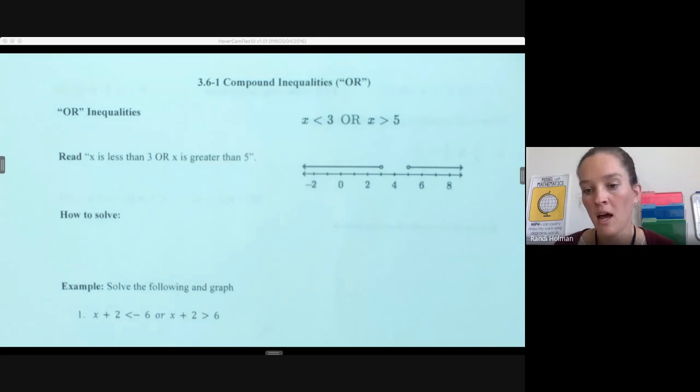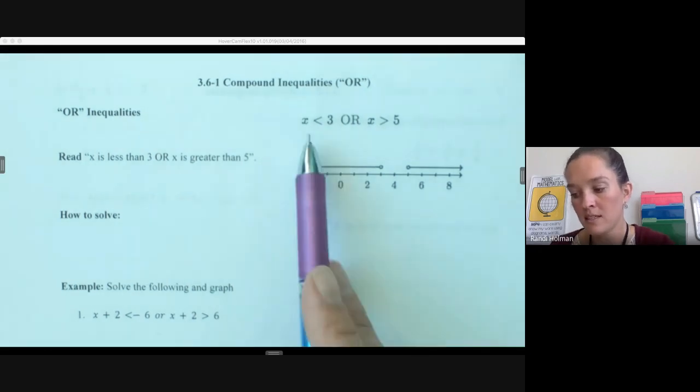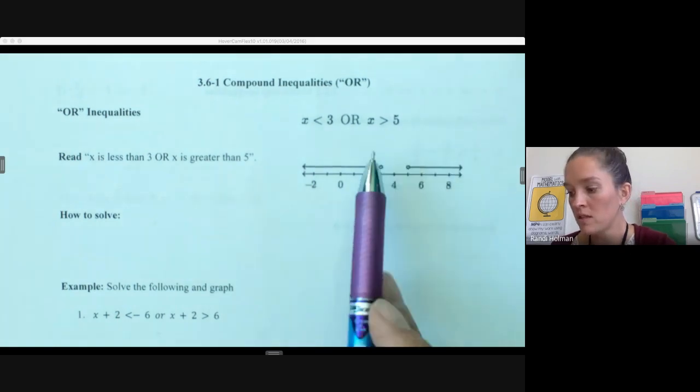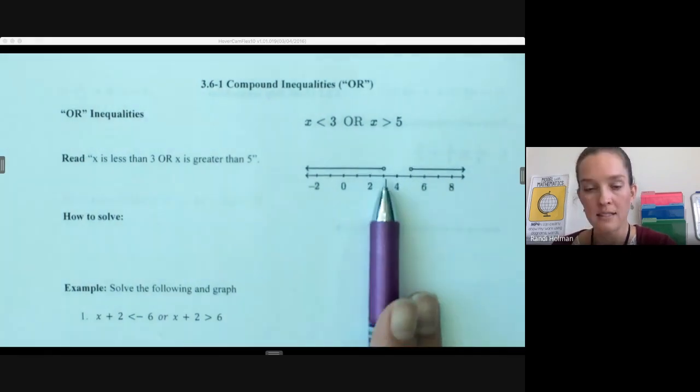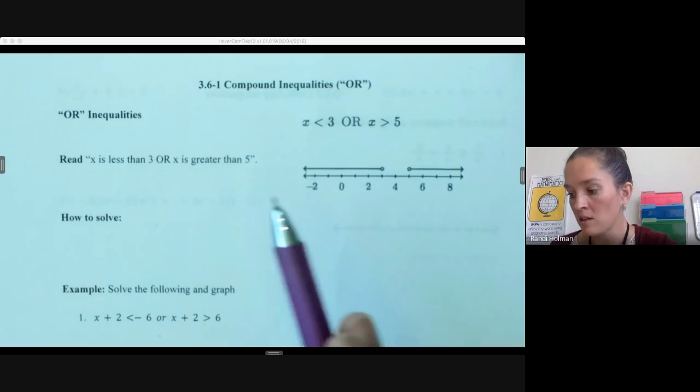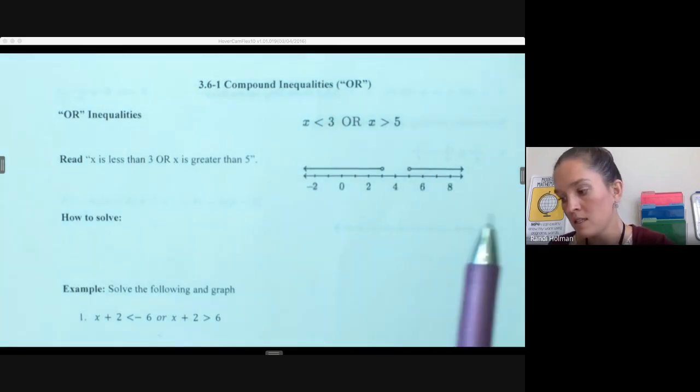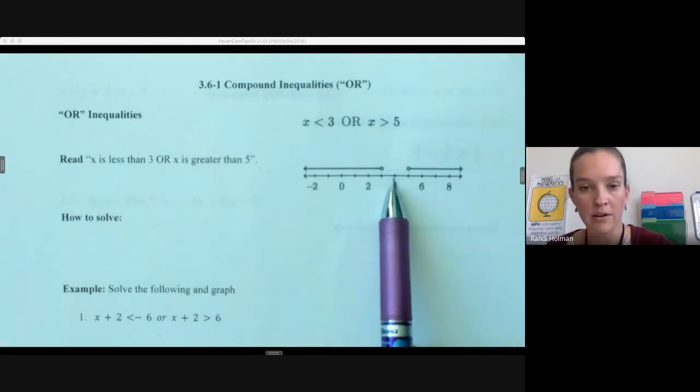So an or inequality has two different scenarios that cannot happen at the same time generally. So things like x is less than 3 or x is greater than 5. So our solutions include all of these things that are less than 3 as well as all of these things that are greater than 5. It does not include these things in the middle here.